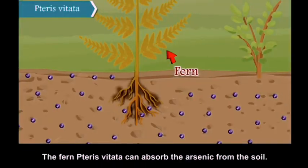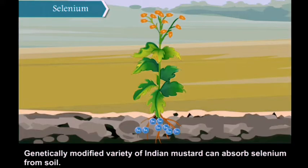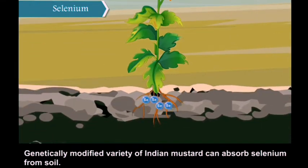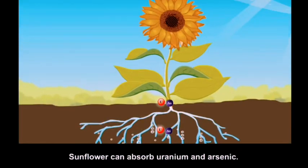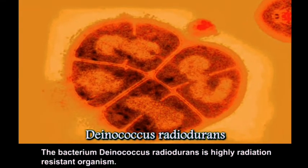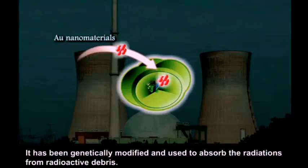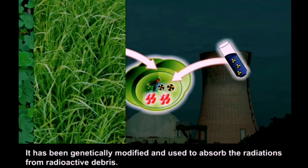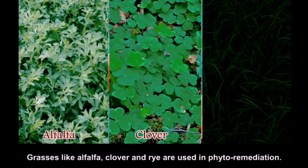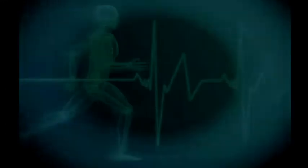Examples of bioremediation: the fern Pteris vittata can absorb arsenic from soil; genetically modified varieties of Indian mustard can absorb selenium from soil; sunflowers can absorb uranium and arsenic; the bacterium Deinococcus radiodurans is highly radiation-resistant and has been genetically modified to absorb radioactive debris. Legumes like alfalfa, clover, and rye are used in phytoremediation.